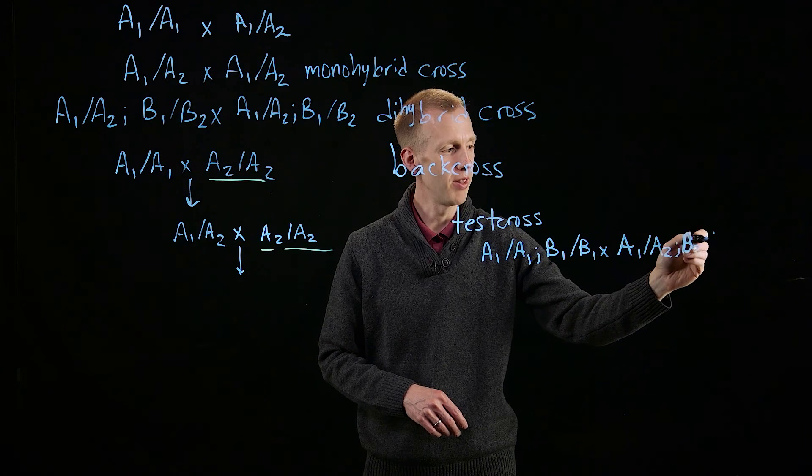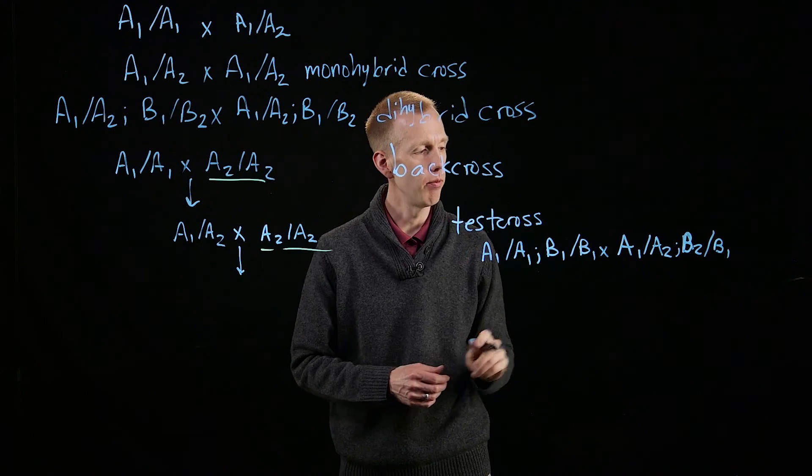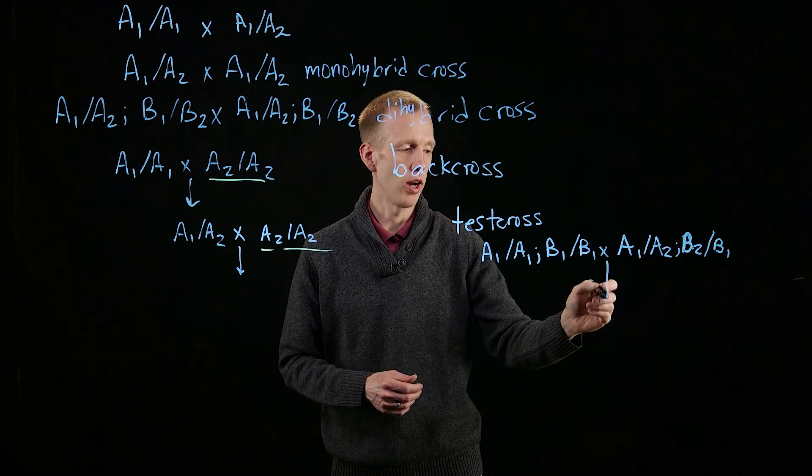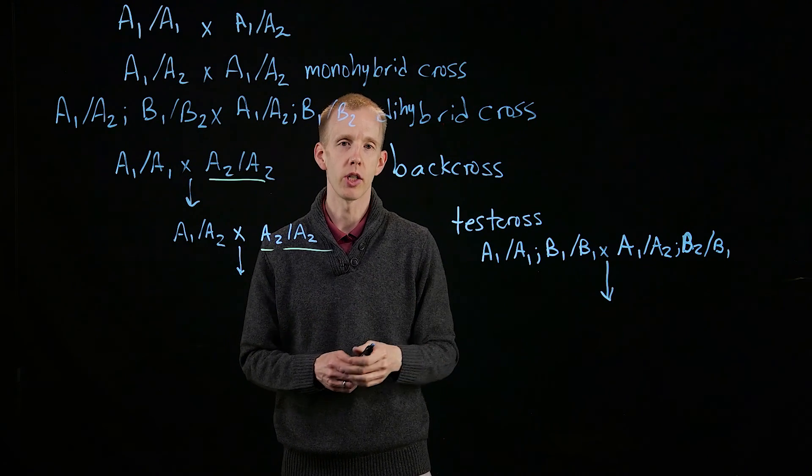That would be gene B. Dihybrid. So heterozygous at gene A, heterozygous at gene B. And this cross is also a special type of cross that we'll use later in the semester when we look at genetic mapping and recombination.